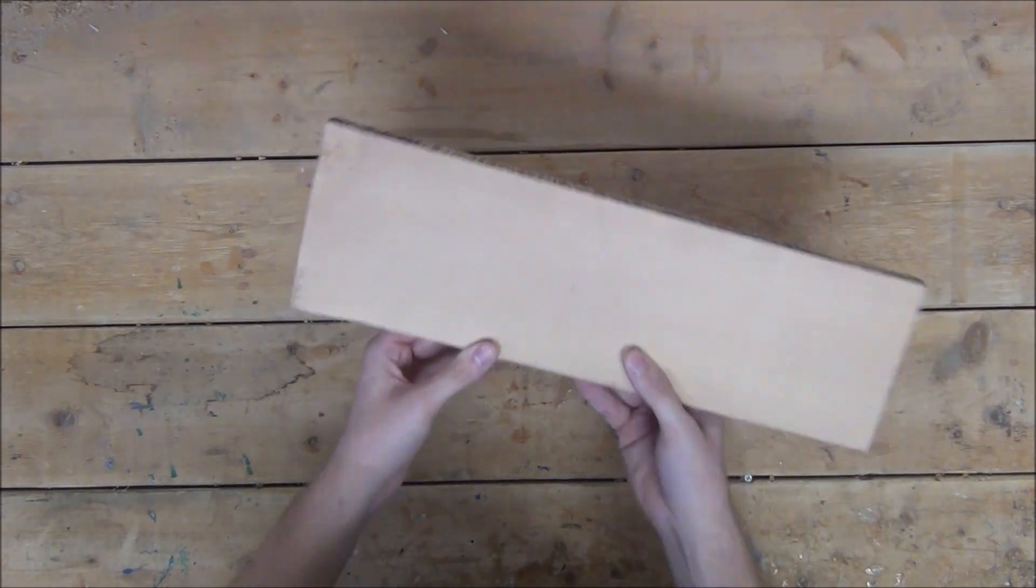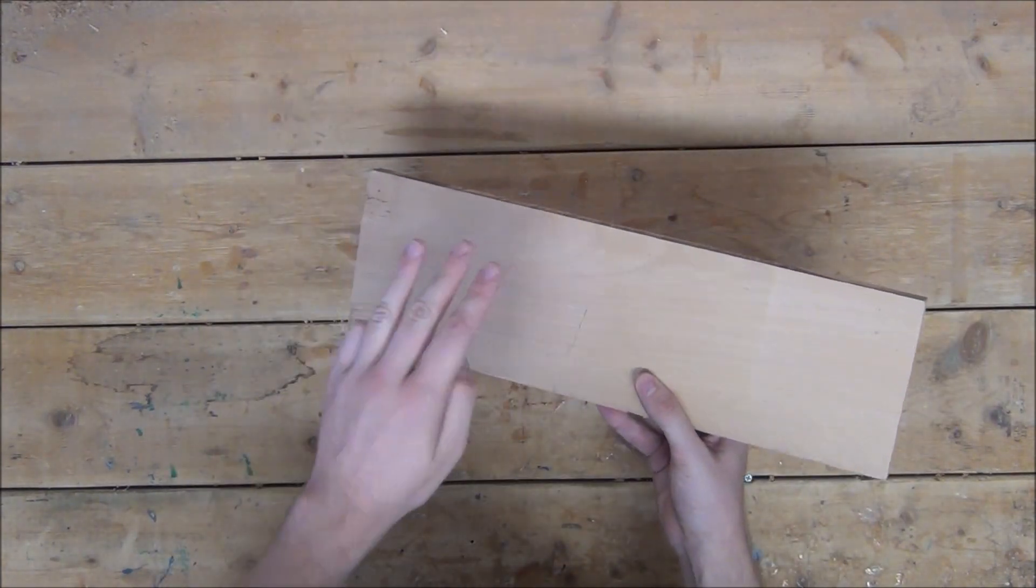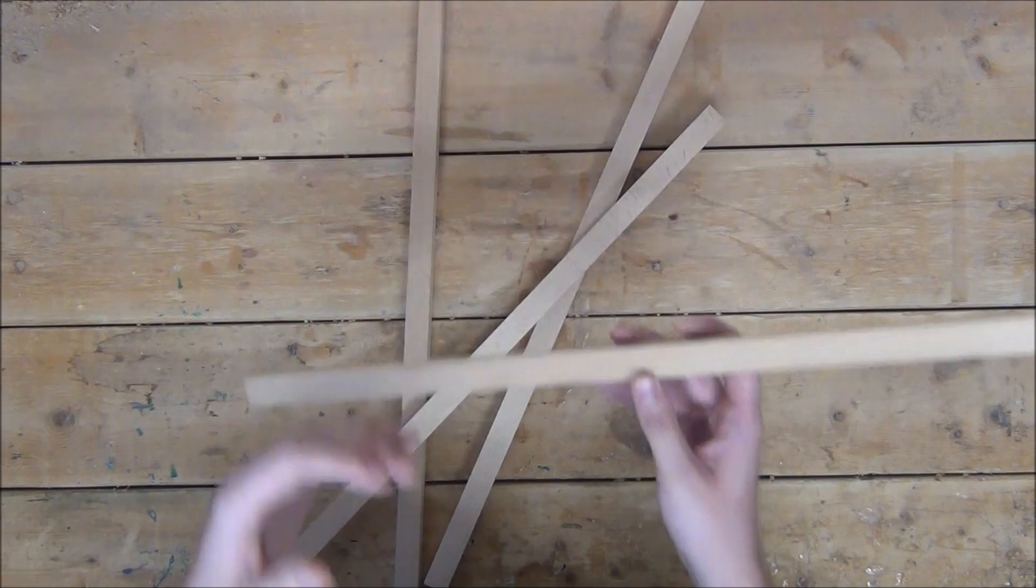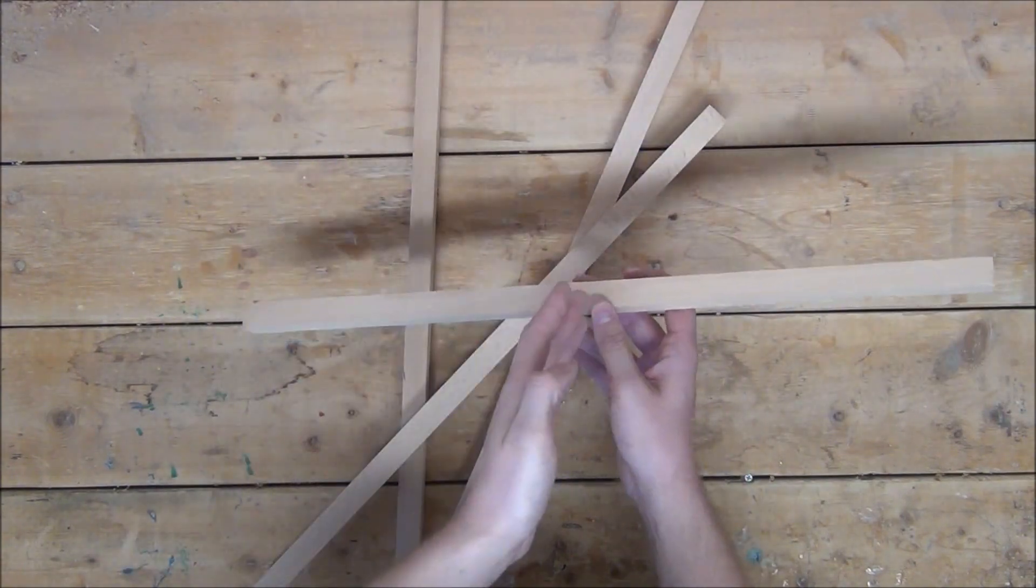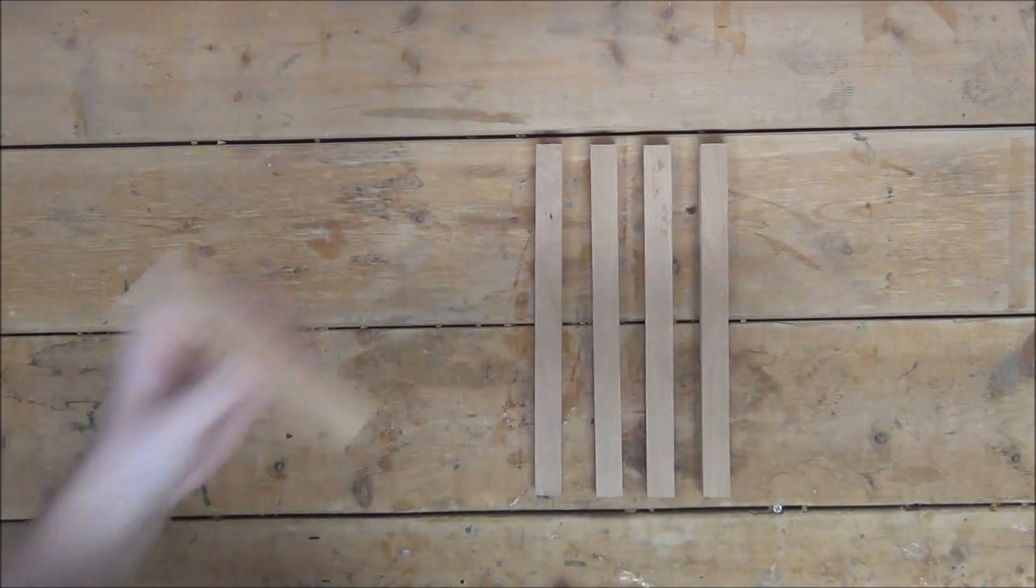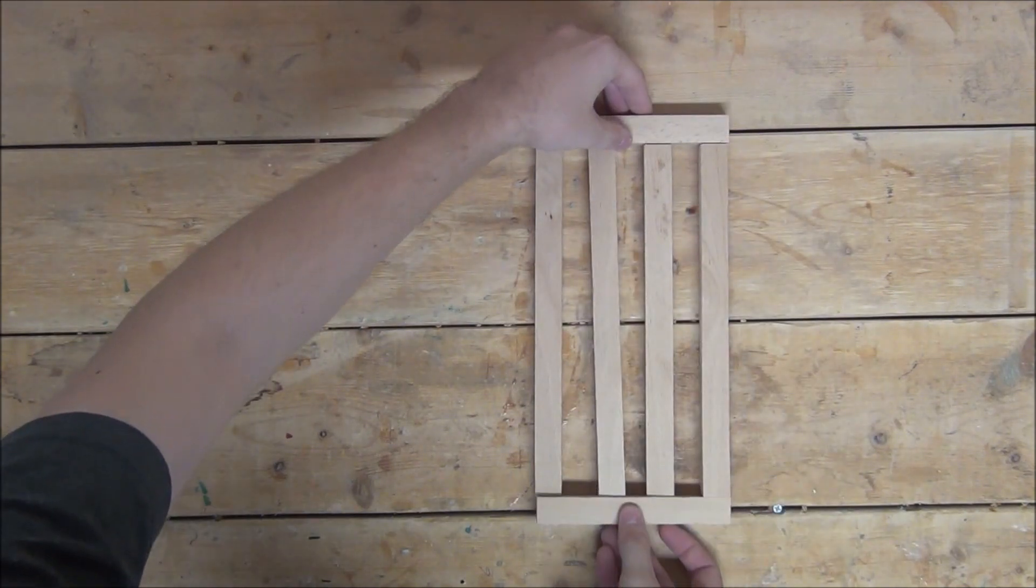First, we're going to need to take an oak board and cut it into strips that are 3 quarter inches square. We can then cut out four 10-inch long pieces, space them 3 quarters inch apart, then glue and nail blocks from the top and bottom to hold them in place.